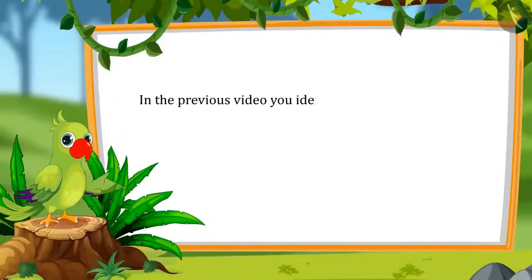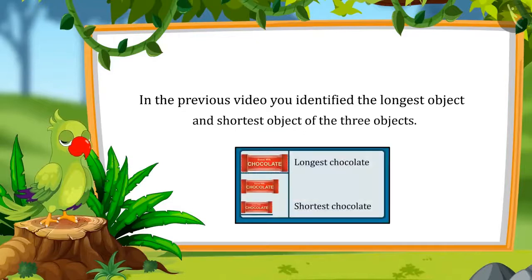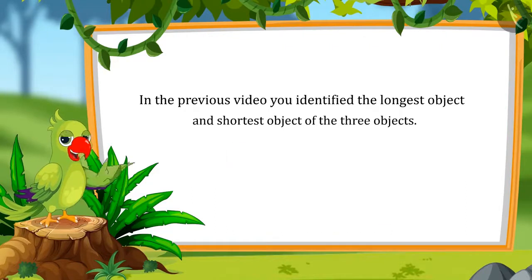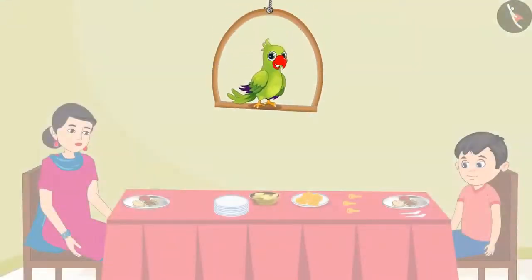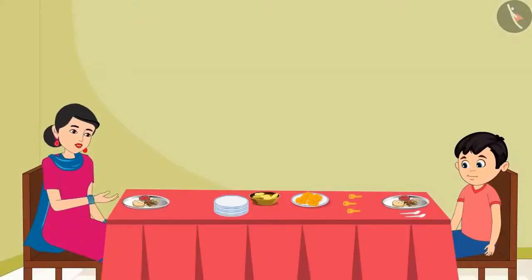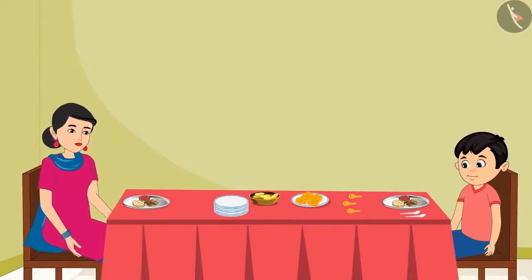So kids, in the previous video you identified the longest and shortest objects out of three. In this video, we will learn about some common mistakes in identifying long and short objects. Chotu and his mother have sat down to have their food. Mummy asks, 'Chotu, can you please give me a spoon?' Chotu asks, 'Which spoon, mummy — the short one or the long one?'